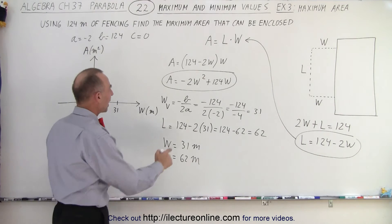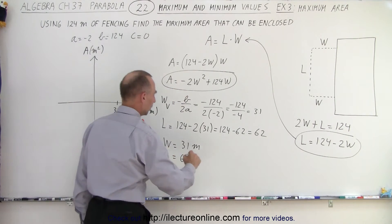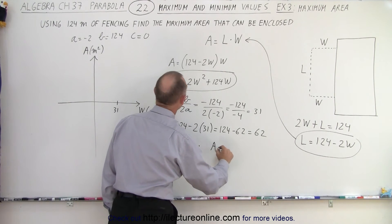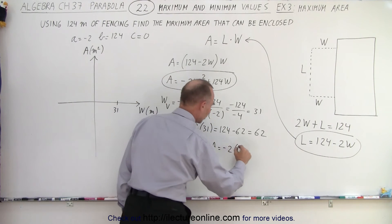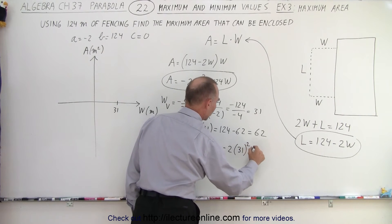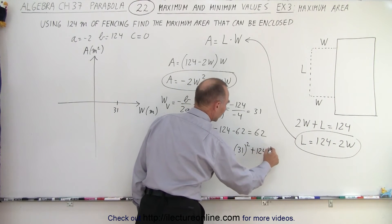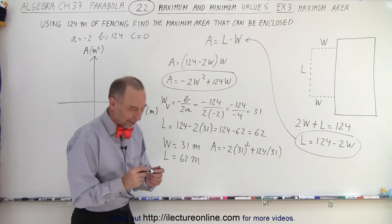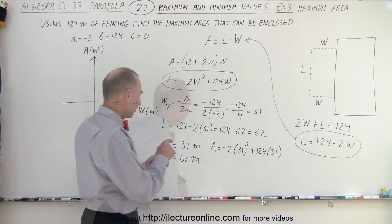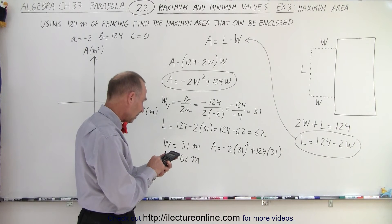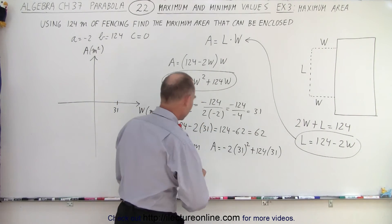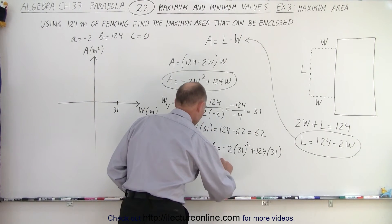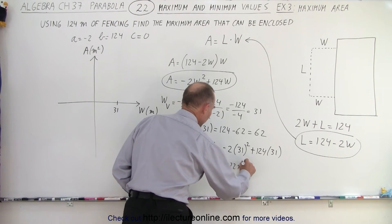Well, then we can go ahead and plug that back into our equation. So we know that area is equal to minus 2 times the width, the width would be 31 squared, plus 124 times 31. I think for that, I'll grab my calculator. So what do we have here? We have 124 times 31 minus 31 squared times 2 equals 1,922. So A equals 1,922 meters squared.